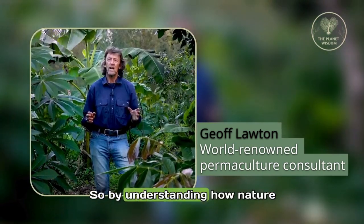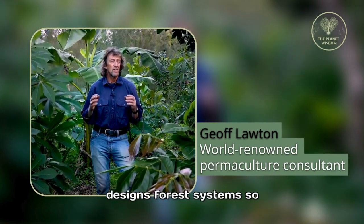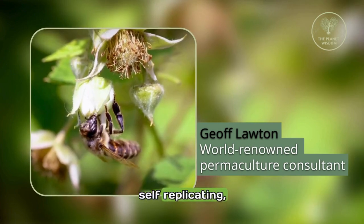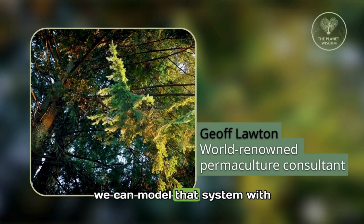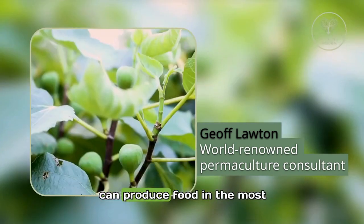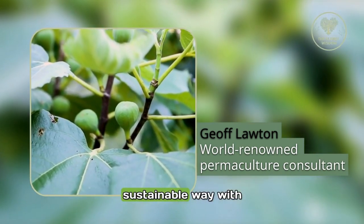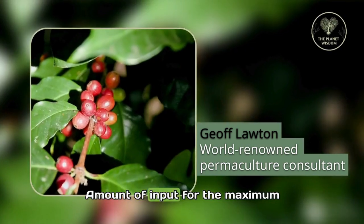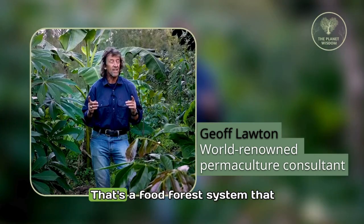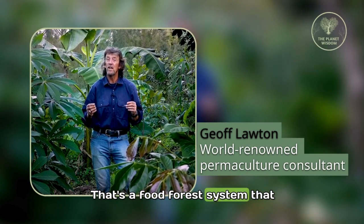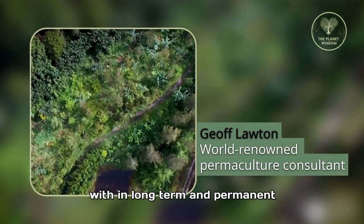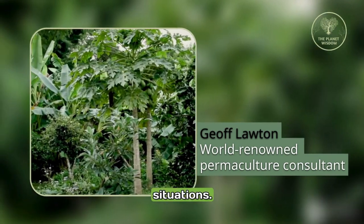By understanding how nature designs forest systems so they're self-maintaining and self-replicating, we can model that system with productive species so that we can produce food in the most sustainable way, with the minimum amount of input for the maximum amount of output anywhere in the world. That's a food forest system that we can actually design and work with in long-term and permanent situations.